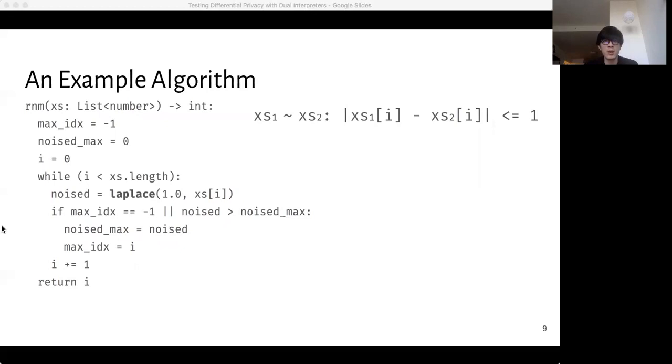So let's look at an example algorithm called report noisy max. For this one, the input is an array of numbers, and two inputs are considered similar if their point-wise values are bounded by one. Under this similarity relation, report noisy max is a two-differentially private algorithm. Operationally, this algorithm adds noise sampled from this highlighted Laplace distribution to each of the input values in the input array, and it remembers the index of the largest noisy value seen so far. At the end of the loop, it returns that index.